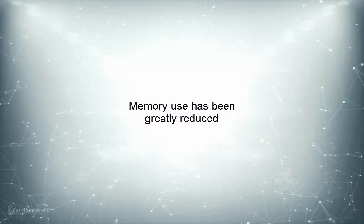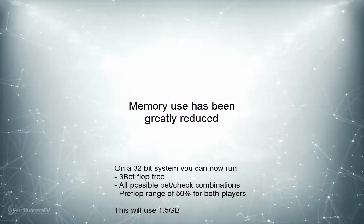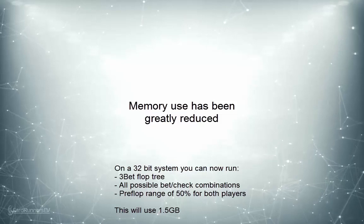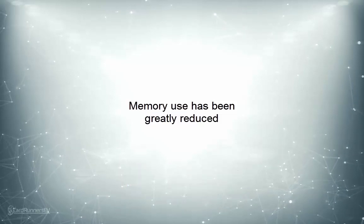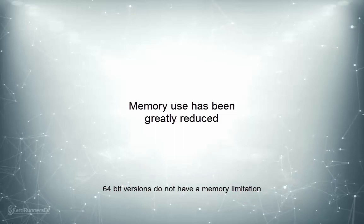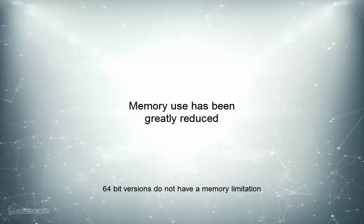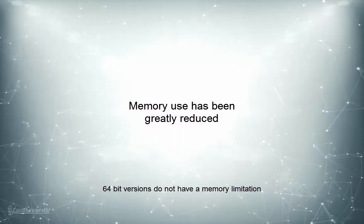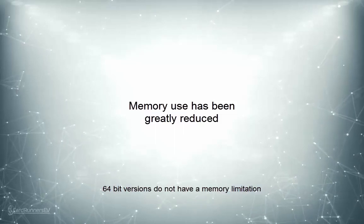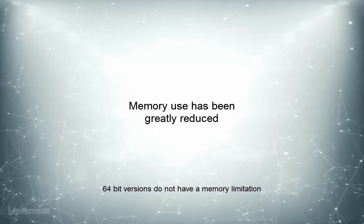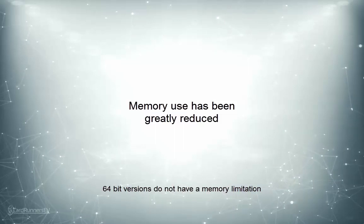Due to all of the work done over the past month, it is now possible to run as much as the 3-bet flop tree with all possible bet-check combinations on both the unknown turn and river, with both players holding as much as a 50% pre-flop range, and this will take as little as 1.5GB. Now this 2GB limitation can be solved by providing a 64-bit version, which we will look into later. However, I felt that for the moment memory use needed to be the primary focus so that users with 32-bit systems could have access to the software as well. I feel that the current memory use should be plenty for the purposes of the beta, and we can look into providing a 64-bit version at a later point.